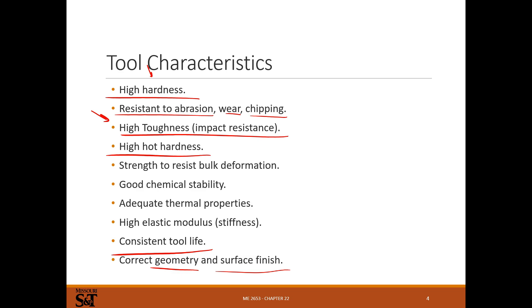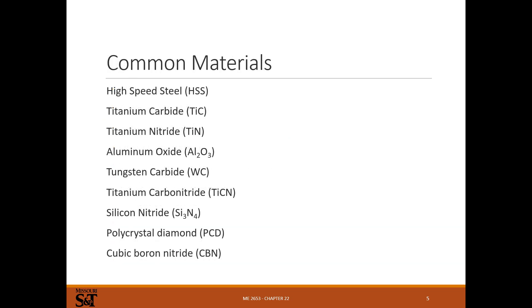We need to be able to get the correct geometry and the correct surface finish for machining. It can't be such a ridiculously strong material that we can't actually shape it into a cutter. So, what materials do you see most commonly? You see high speed steel, especially if you're making a part on a mill or a lathe — you're probably going to use some kind of high speed steel tooling, at least initially.